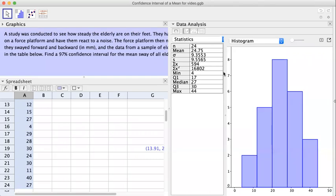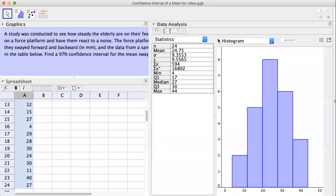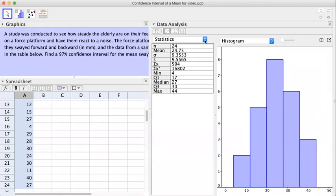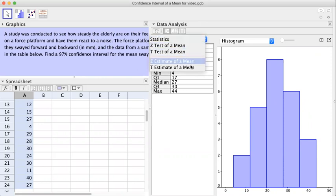We're going to use the drop down menu right here. You're going to choose T Estimate for the Mean because we don't know the population standard deviation. Click on this.